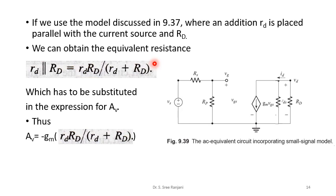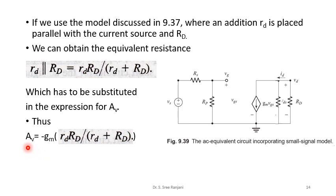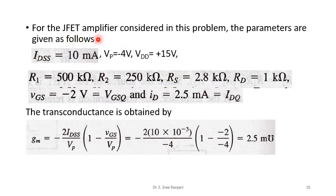Using the second model, where rd is placed in parallel with capital RD, we replace both with the equivalent resistance rd·RD/(rd + RD). The voltage gain then becomes AV = −Gm·(RD·rd)/(RD + rd). For the JFET amplifier, the given parameters are: IDSS = 10 mA, VP = −4 V, VDD = 15 V, with specific values of R1, R2, RS, and RD. The Q point yields VGS and ID = 2.5 mA.